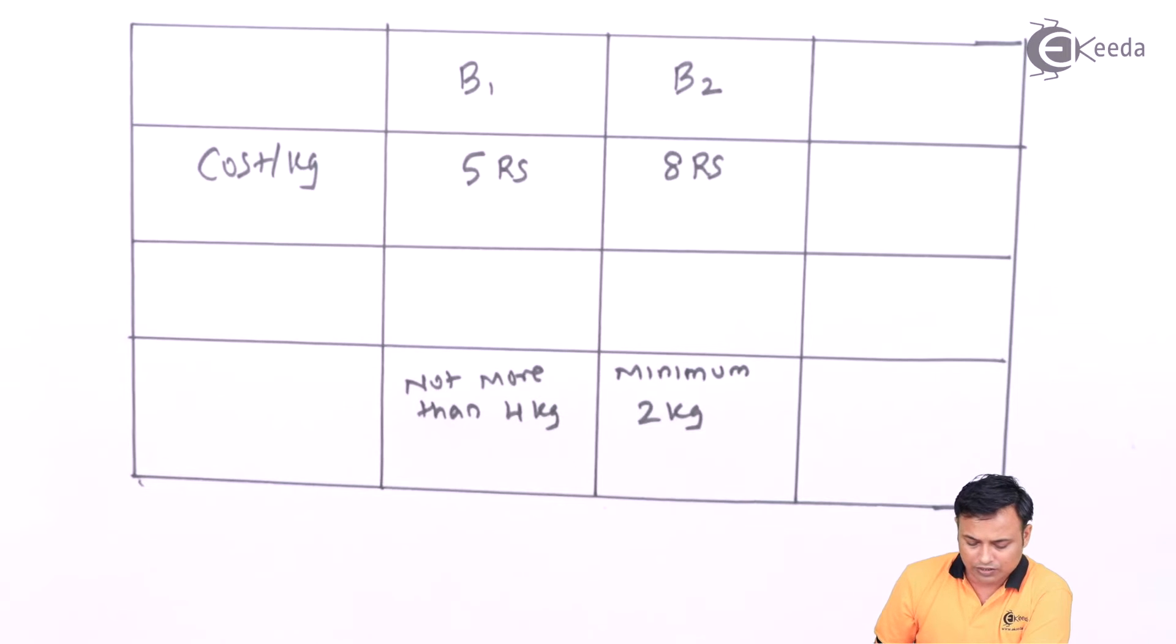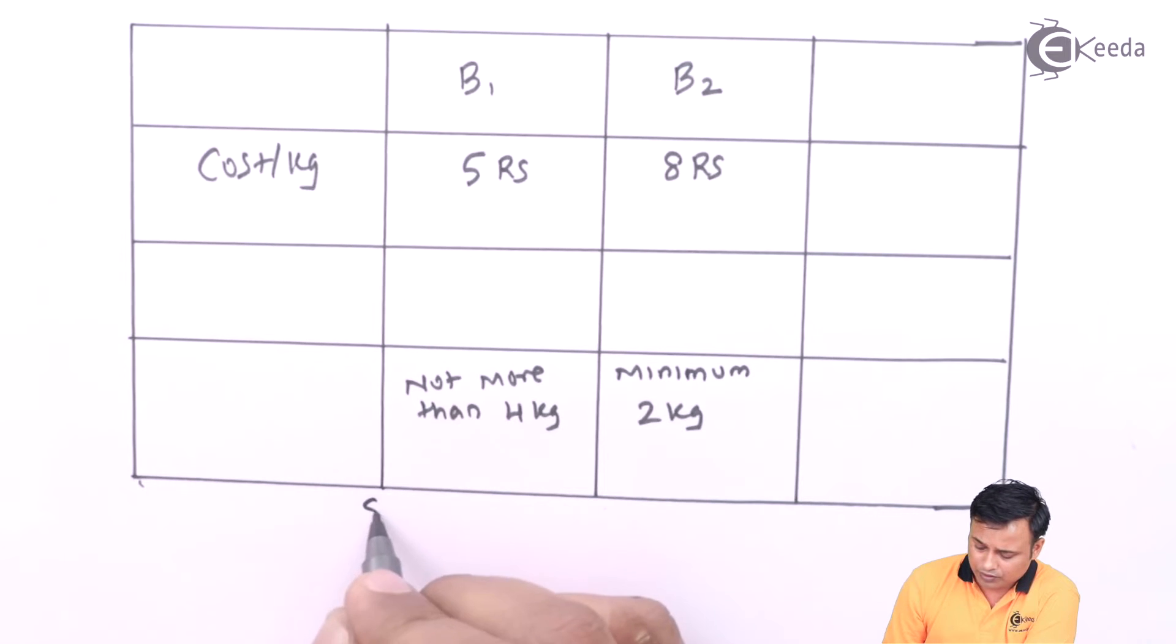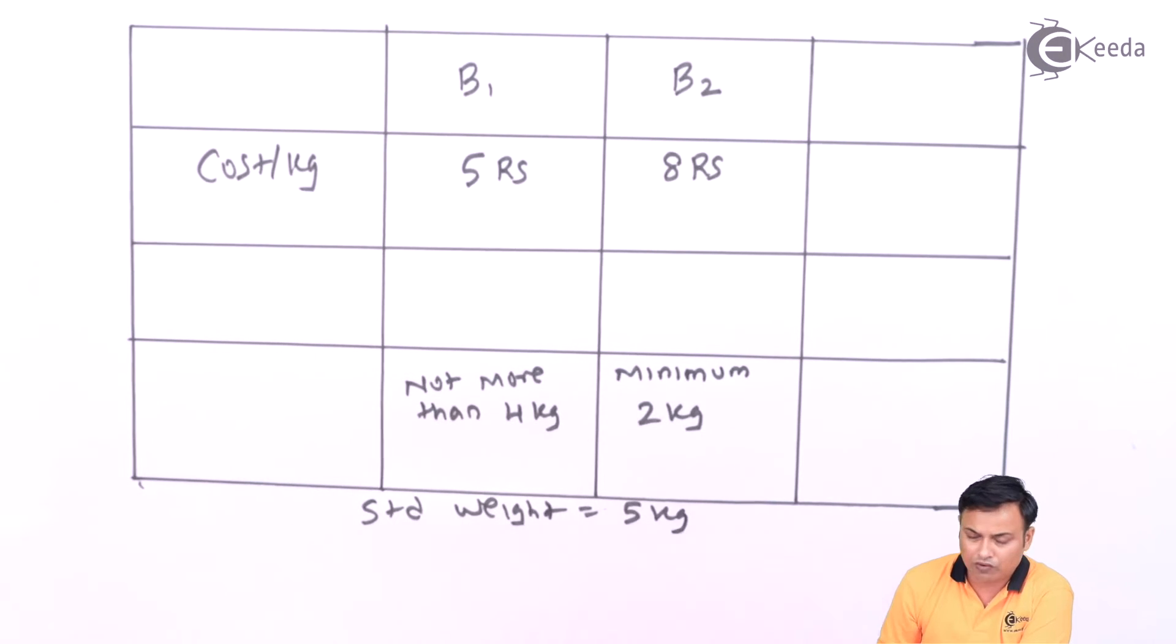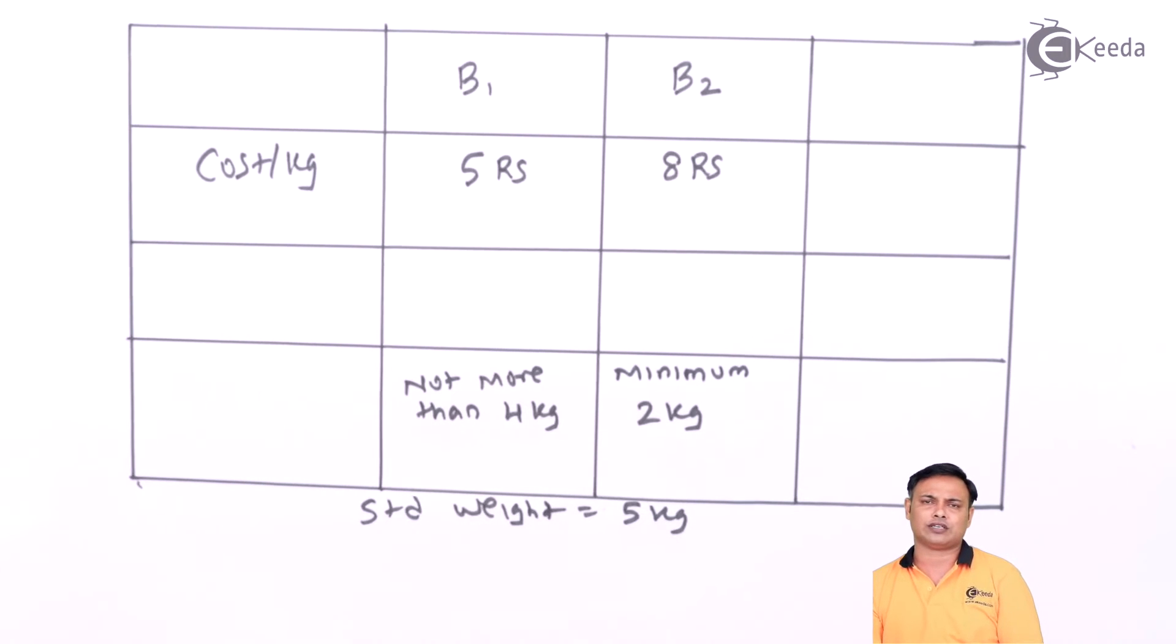We are given the overall weight of the brick should be 5 kg standard. They don't want a brick less than 5 kg or more than 5 kg. They want it exactly 5 kg.